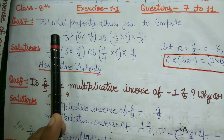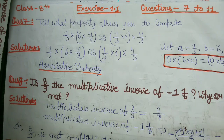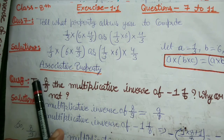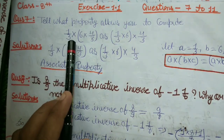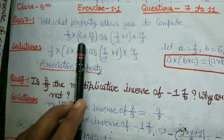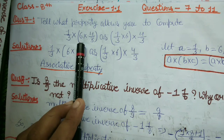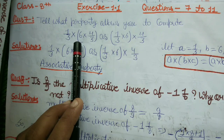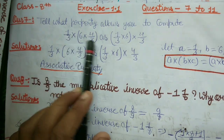Kyunki humne properties already padh li hain — maine aapko link mein neeche description mein diya hua hai, aap chahein to saari properties wapas se dekh sakte hain. Properties of rational number kya thi? Closure property, associative property, commutative property, distributive property — yeh 4 properties humne padhi thi. Toh yeh kaun si property hai? Associative property hai.